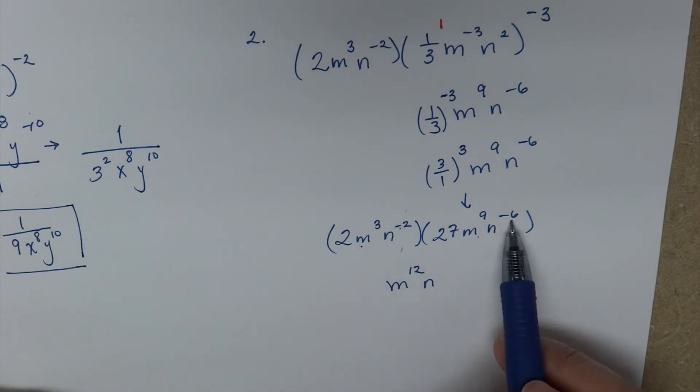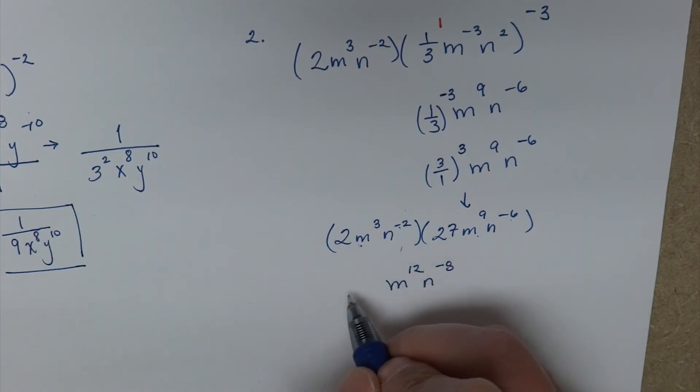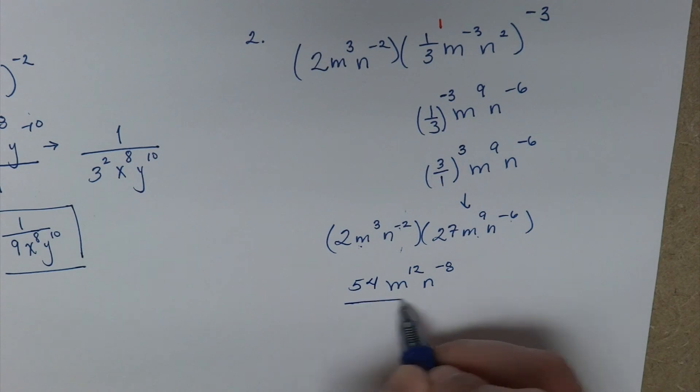Now negative 2 and negative 6, well negative 2 and negative 6, that gives me a total of negative 8. And then 2 times 27 is 54.